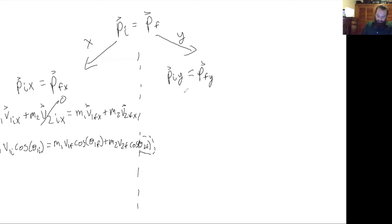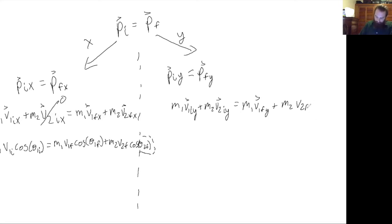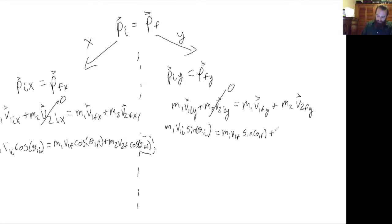Following the same procedure in the y-direction, it looks pretty similar: m1 v1 initial y plus m2 v2 initial y equals m1 v1 final y plus m2 v2 final y. Since mass 2 was at rest to start, that term goes to zero. Breaking our vectors into components again, we get: m1 v1 initial sine theta 1 initial equals m1 v1 final sine theta 1 final plus m2 v2 final sine theta 2 final.